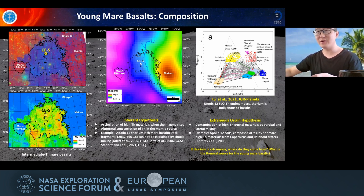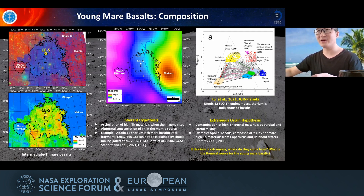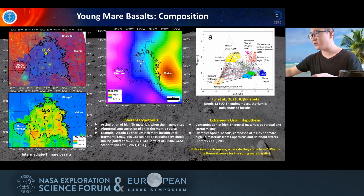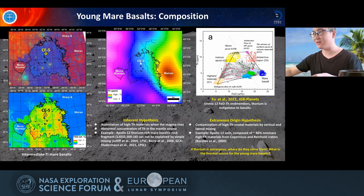Thorium and other incompatible elements are elevated over this young mare basalt. We don't know very well how and why thorium and other incompatible elements are elevated in mare basalt. There are two hypotheses: one is an inherent hypothesis, and another is a genesis hypothesis. Based on the work of Fu et al. in JGR Planets, they think that the thorium is endogenous to the mare basalt here. But I think that is far from well-known, and the Chang'e-5 samples will provide lots of information on this point.